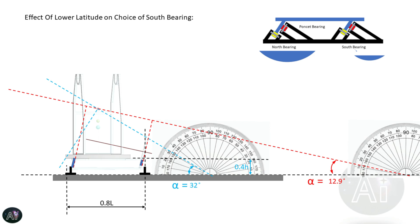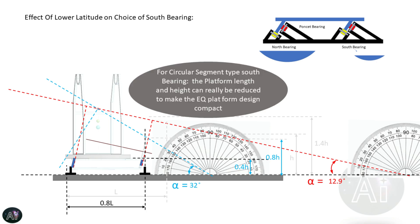Now what if we choose the same type of bearing as north bearing? Let's take the same example as 12.9 degrees north and 32 degrees north. You can clearly see irrespective of the latitude you can very well control the height as well as the length of the equatorial platform, which means if you are choosing these type of north and south bearing, designing a compact equatorial platform for lower latitudes is possible.